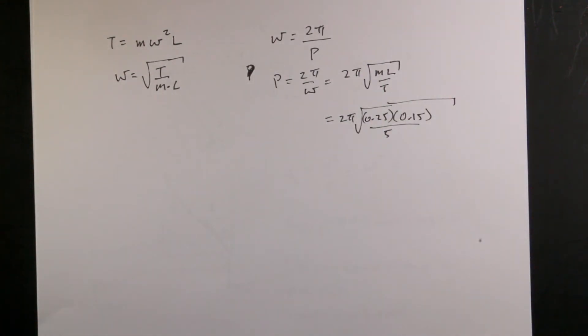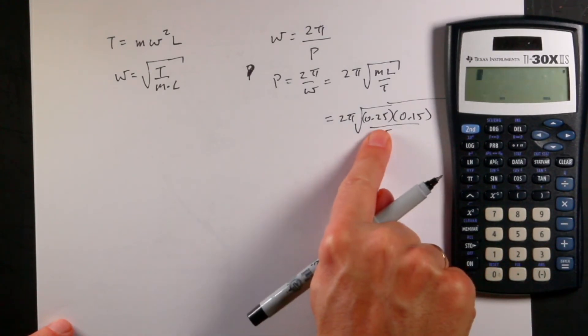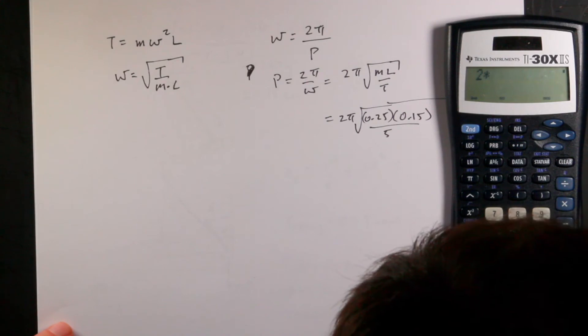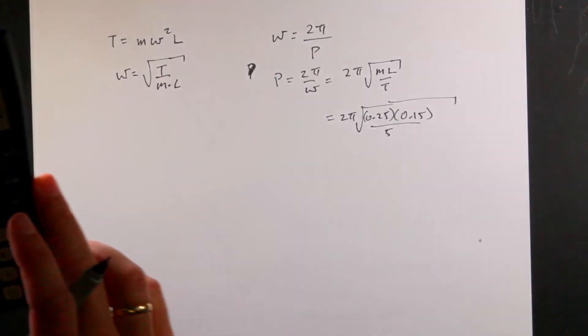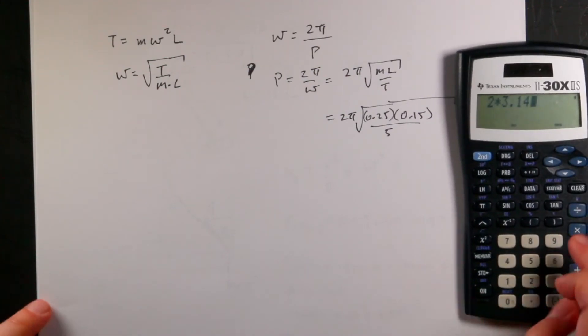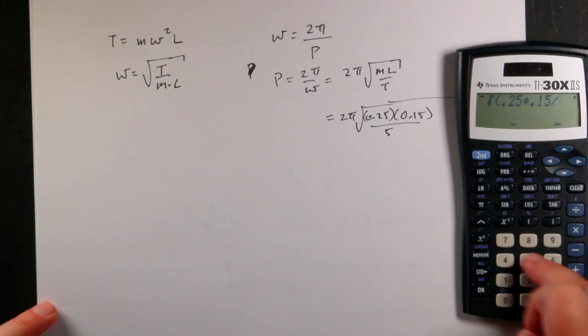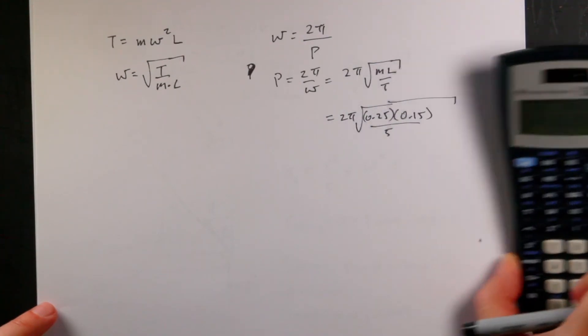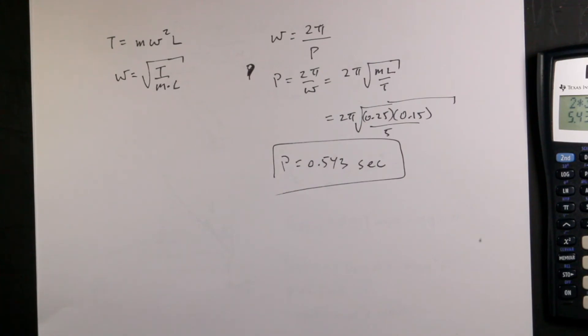So I actually have the calculator right here. Let's do it the old-fashioned way with the actual calculator, which I don't really like calculators, but okay, put it right there. You can see it right there. Okay, so I'm going to do the, I can do it all at one time. 2 times pi. There is a pi button on here. I thought. I know there's a pi button. I can't see. Pi. Where's pi? Okay, that's fine. 3.14, do it the old way, times the square root 0.25 times 0.15 divided by 5, close parentheses, and I get 0.543 seconds. So it's going pretty fast. It only takes half a second to go around. That's fine.